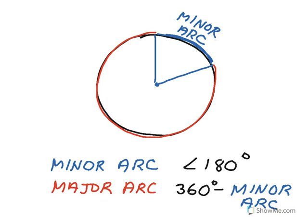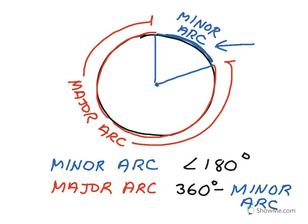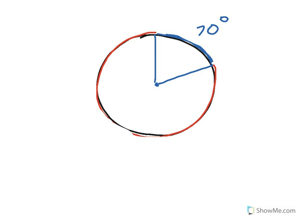In this next diagram, I'll define minor arcs and major arcs. A minor arc is the blue arc shown here — any arc that's less than 180 degrees. The major arc is the other part of the circle. The entire circle is 360 degrees, so the major arc equals 360 degrees minus the minor arc, and it's always greater than 180 degrees. For example, if the minor arc is 70 degrees, the major arc is 360 minus 70, which is 290 degrees.